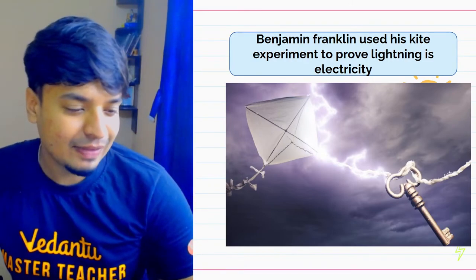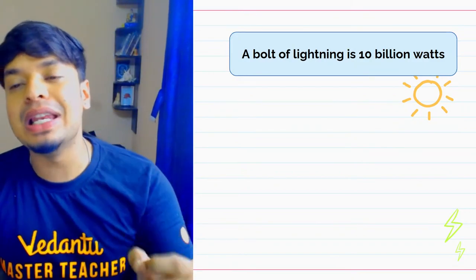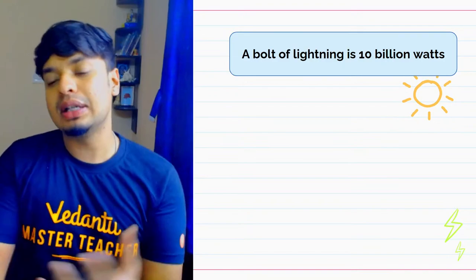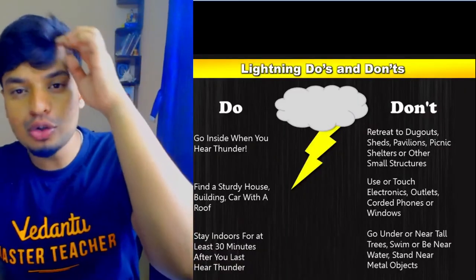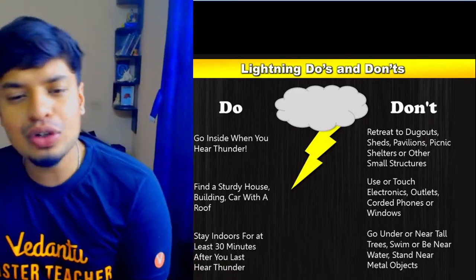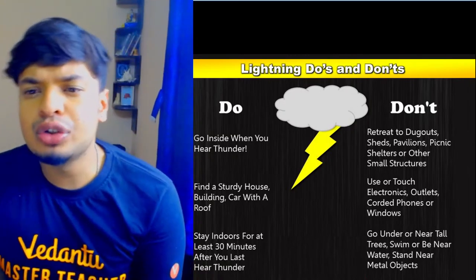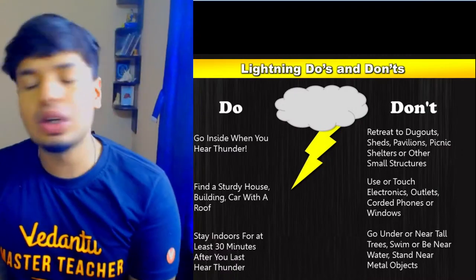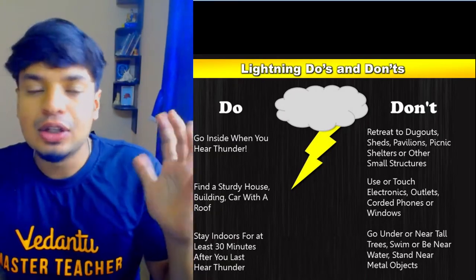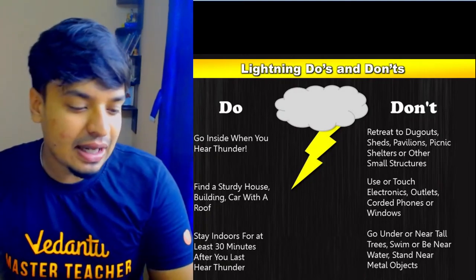The electricity from static buildup — like in blankets — is the same as in clouds. Lightning can be super strong: a bolt of lightning is 10 billion watts. If that much electricity passes through anybody, rest in peace! So what should you do during lightning? Go inside when you hear thunder — find a sturdy house, building, or car with a roof. Stay indoors for at least 30 minutes after the last thunder. Do not take shelter in sheds, pavilions, or small structures. Avoid electronics, corded phones, windows, tall trees, tall buildings, and running water.